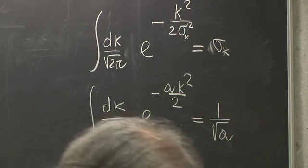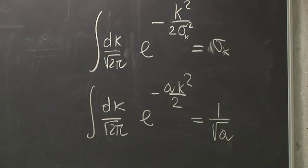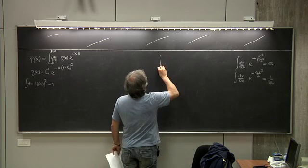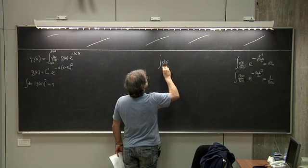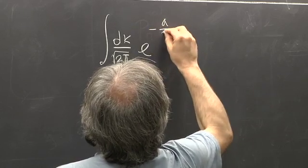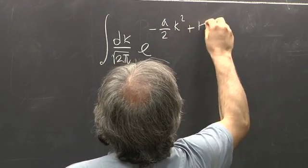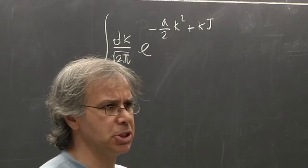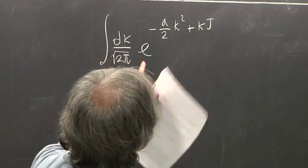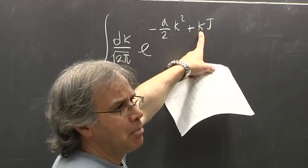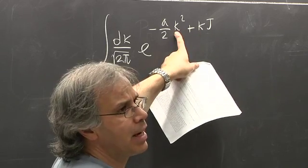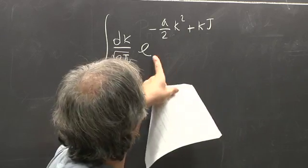Now, suppose that I want to do the integral of dk over square root of 2 pi, e to the minus a over 2 k squared plus k times some variable j — just some real number j. This is a Gaussian with an extra linear term. As far as convergence is concerned, this is not a problem, because for very large k, the quadratic term wins and the integral exists. Whenever you see k squared and k, you start thinking of completing a square.